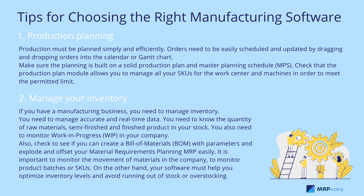Two: manage your inventory. If you have a manufacturing business, you need to manage accurate and real-time data. You need to know the quantity of raw materials, semi-finished, and finished products in your stock. You also need to monitor work in progress (WIP) in your company. Check to see if you can create a bill of materials (BOM) with parameters and explode and offset your material requirements planning (MRP) easily. It is important to monitor the movement of materials in the company, and to monitor product batches or SKUs.